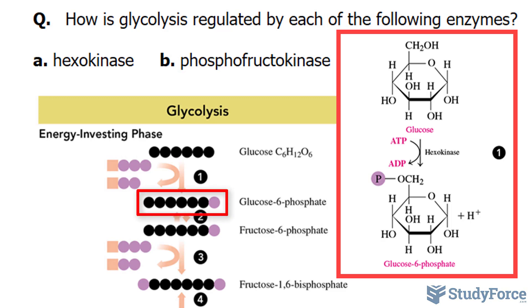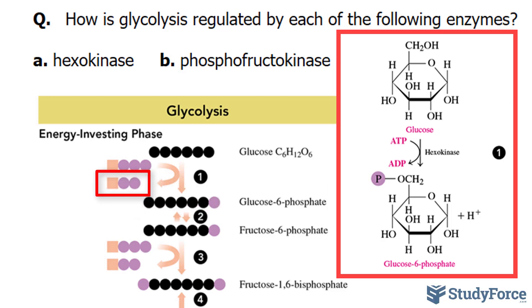Also in this process, the dephosphorylation of ATP forms one molecule of ADP. The enzyme hexokinase is responsible for this reaction, and it is inhibited by high levels of glucose 6-phosphate.